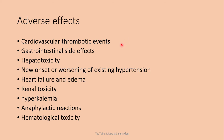For GI tract side effects: these occur in fewer incidents than with non-selective NSAIDs because Celecoxib is selective to COX-2, resulting in less gastrointestinal impact. However, GIT side effects still occur in 20% of patients.